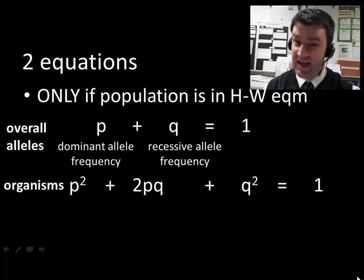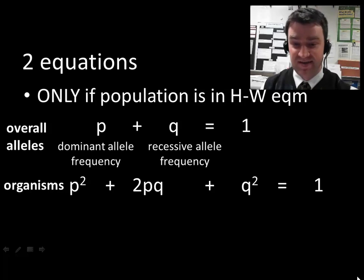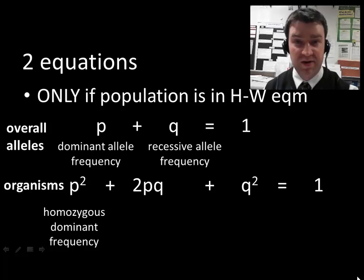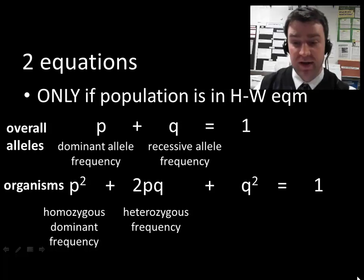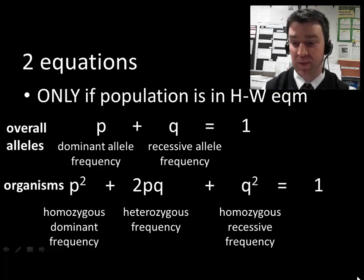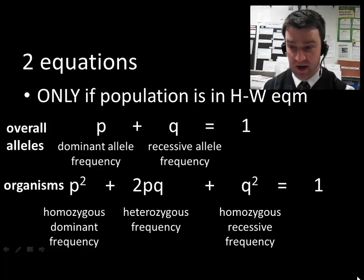If you're ever given organisms, that's usually where we start. We can't directly measure p and q generally, unless we somehow are able to count all of the alleles that every organism possesses. So usually we don't start with knowledge of the allele frequencies. We usually can look at organisms and get some information there. So p squared would refer to the frequency of organisms that are homozygous dominant in genotype. 2pq would be the frequency of organisms that are heterozygous in genotype. And q squared, what I'm going to refer to as the most important term when working with these equations, is the frequency of organisms who are homozygous recessive.